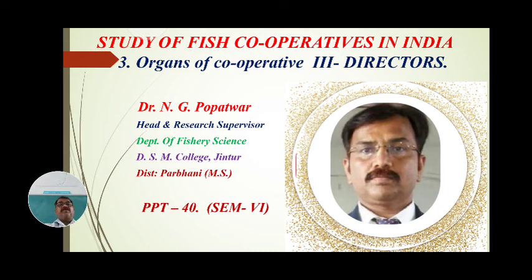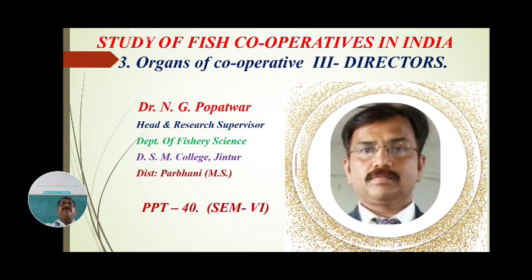In unit 3rd, the third important point we have seen is the organs of cooperative. In the last session we completed two organs: the president — how the president is elected, appointed by members, and what are the roles, skills, and responsibilities of the president — and the second organ, the vice president, including qualities, election process, skills, roles, and responsibilities of the vice president.